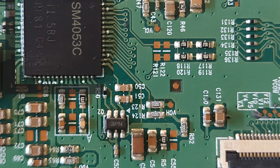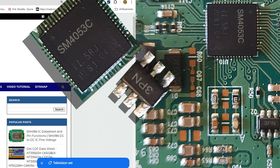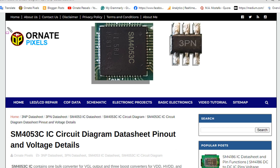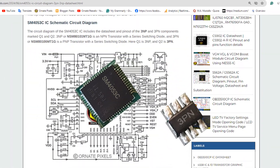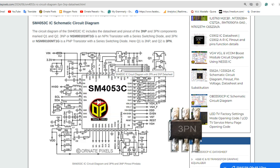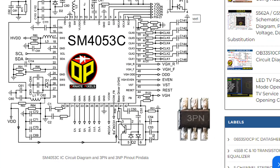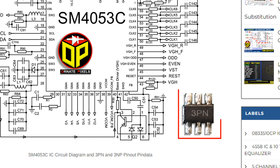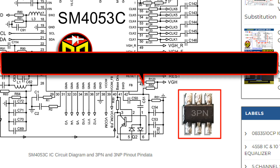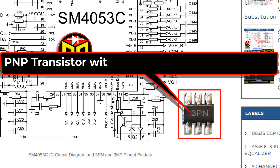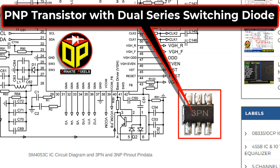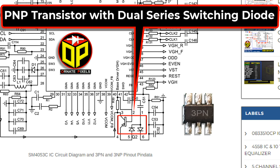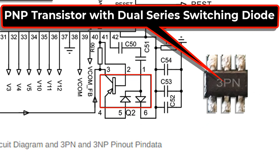For the circuit diagram you can visit the website — the link is in the video description. Now look carefully: first we need to know the name of this component and its function. Its name is PNP transistor with dual series switching diode, and its location is shown here in the circuit diagram.